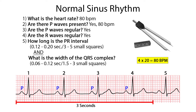Step 5: How long is the PR interval? It's normally 0.12 to 0.2 seconds, or 3 to 5 small squares. This represents the time it takes an impulse to travel from the sinus node to the ventricles. In this normal sinus rhythm, the PR interval does fall in the normal range. What is the width of the QRS complex? This represents the contraction of the ventricles — normally 0.06 to 0.12 seconds, or 1.5 to 3 small squares. The QRS complex is within the normal range here.